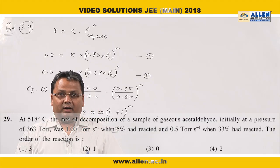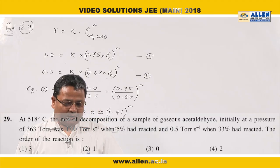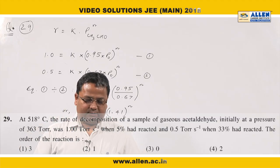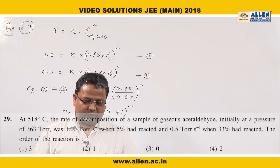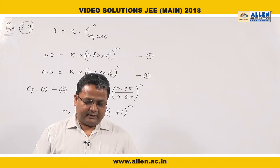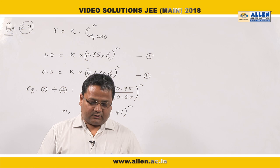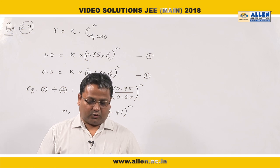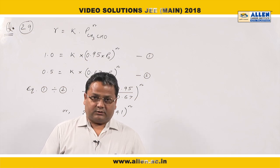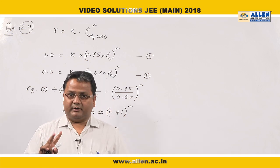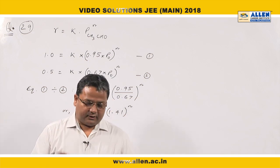Question number 29. At 518 degrees Celsius, the rate of decomposition of a sample of gaseous acetaldehyde, with initial pressure 363 torr, is given at two different percentage progress of reaction.